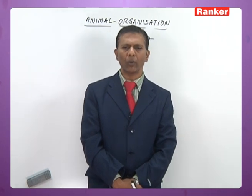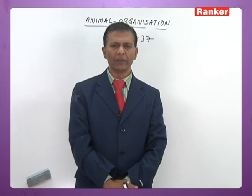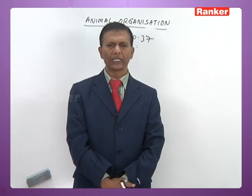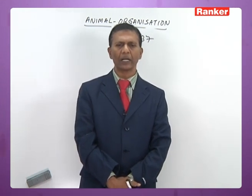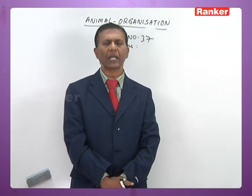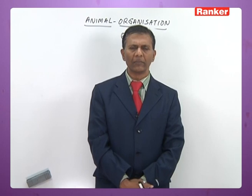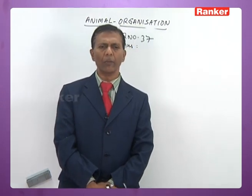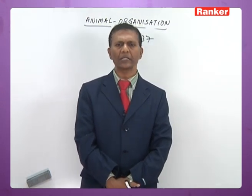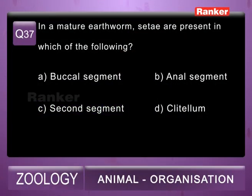The question asks about the segment in which setae are present. Buccal segment (first segment) does not have setae. In the clitellum, setae are lost in the mature earthworm. The anal segment also lacks setae. So the correct answer for the 37th question is the second segment.